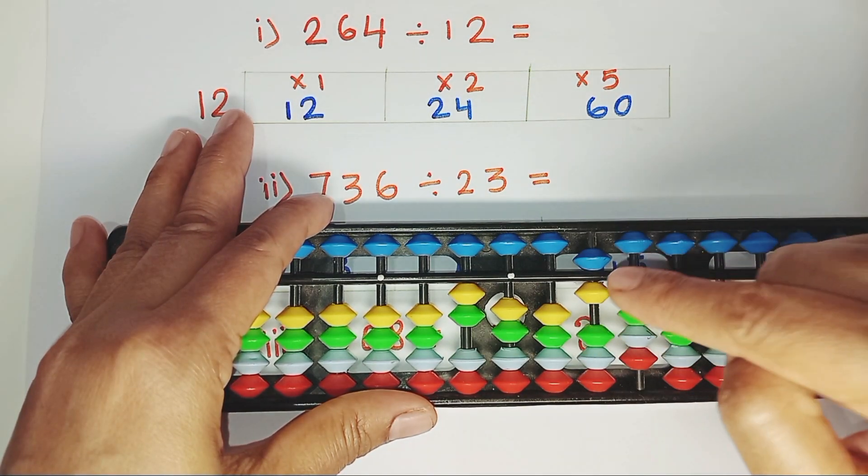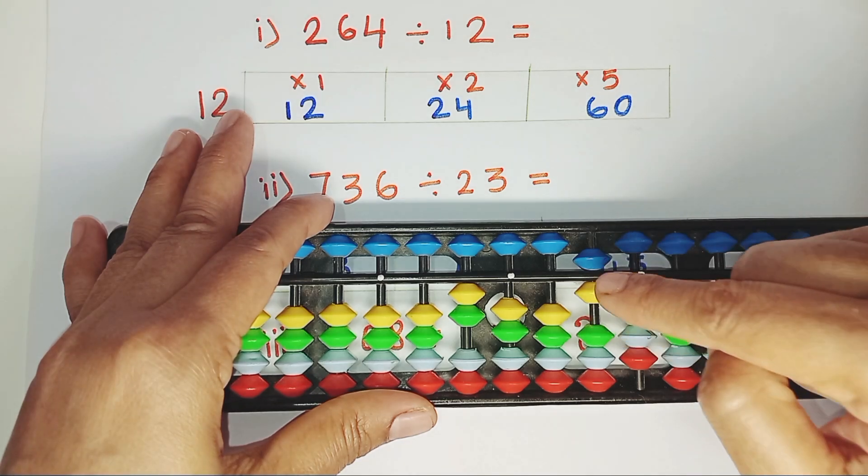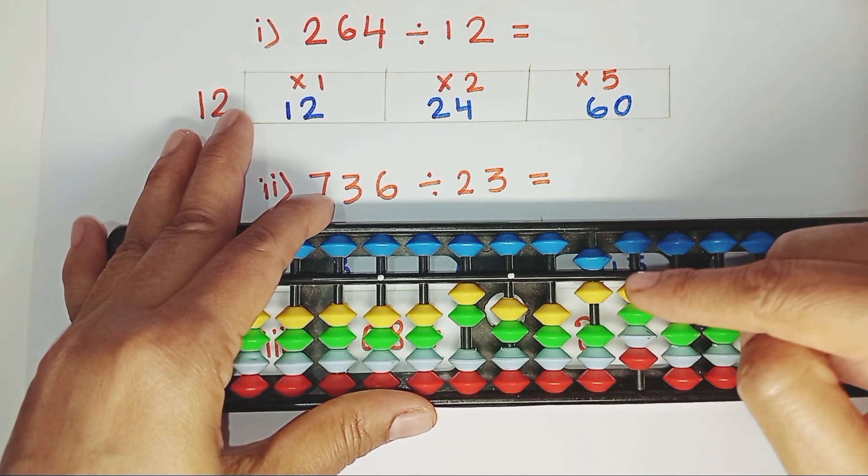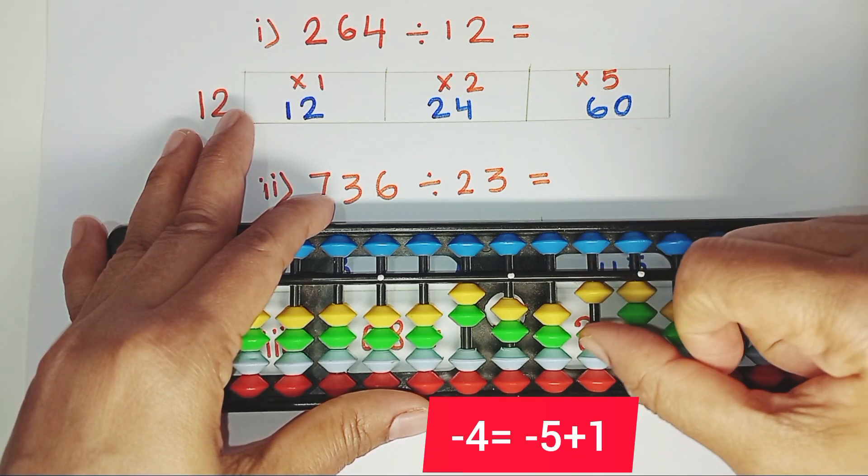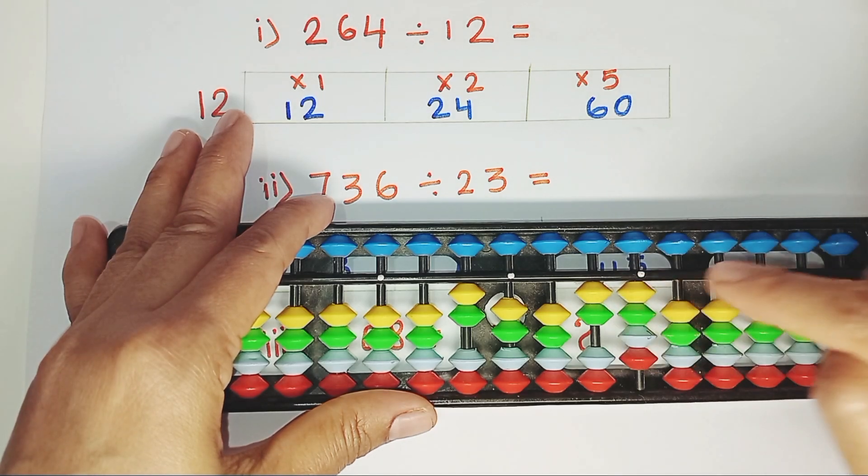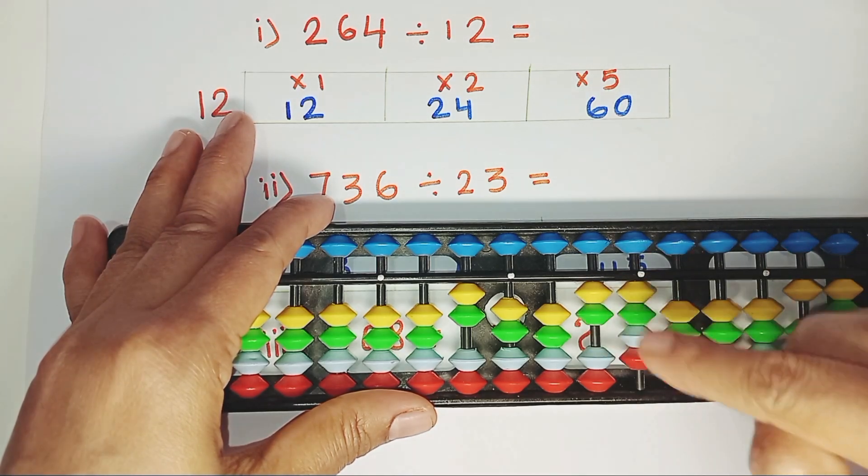We need to subtract 4 from this rod. But it is not possible to subtract 4 directly. Here we need to apply 5's complements. Subtract 5, add 1 to subtract 4. 2 and 4. 24 is left.